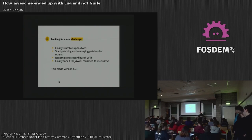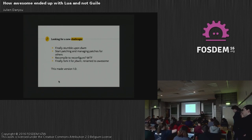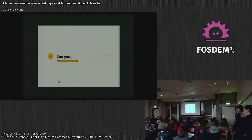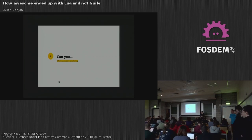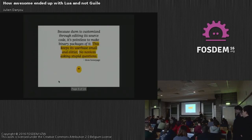People started to use Awesome because it was like DWM but better — with more features, with a configuration file, which is very handy when you want to change things without having to recompile everything. It was more easy to maintain, it was packaged in Debian, it was easy to use — more easy than DWM.